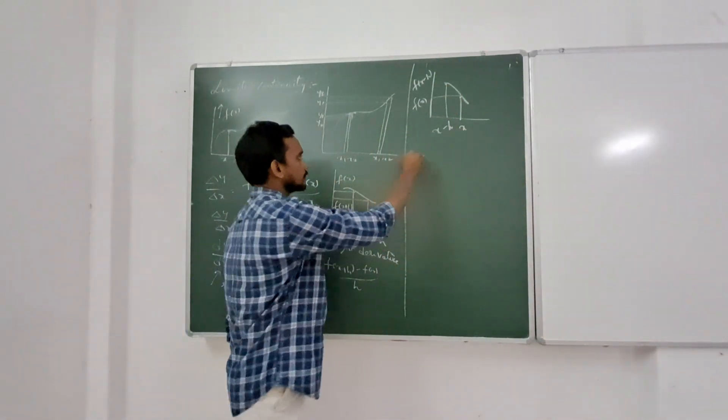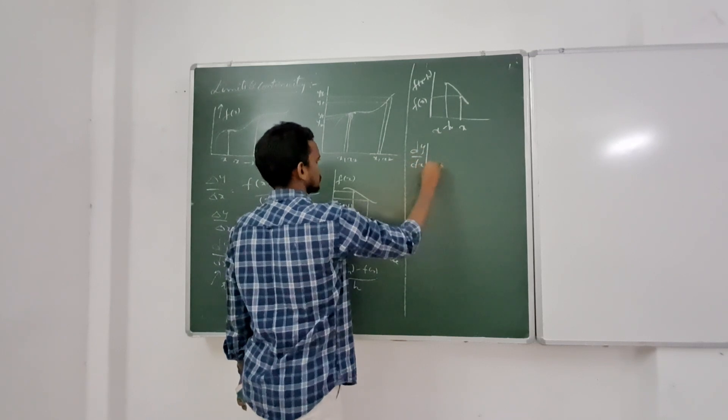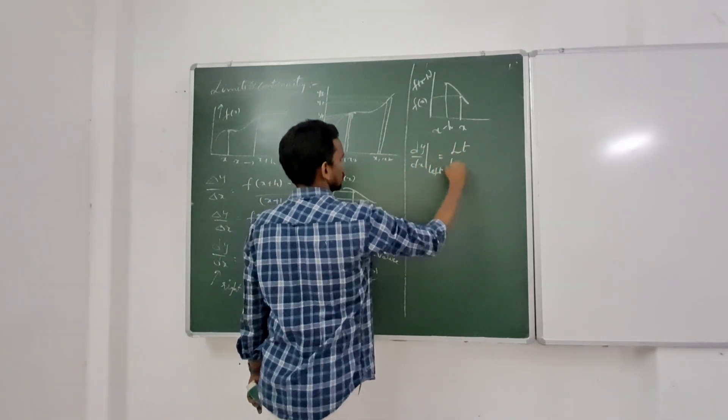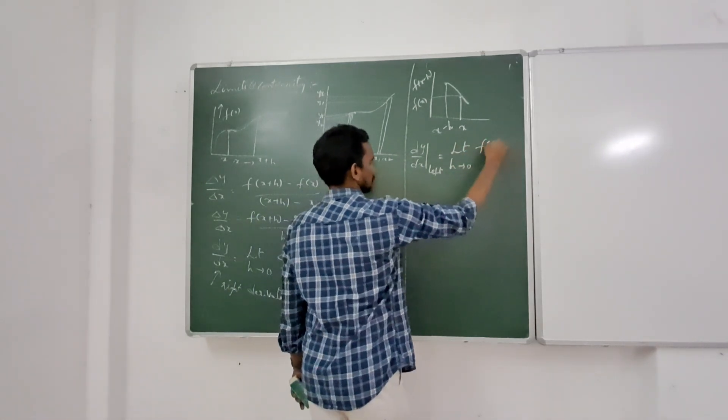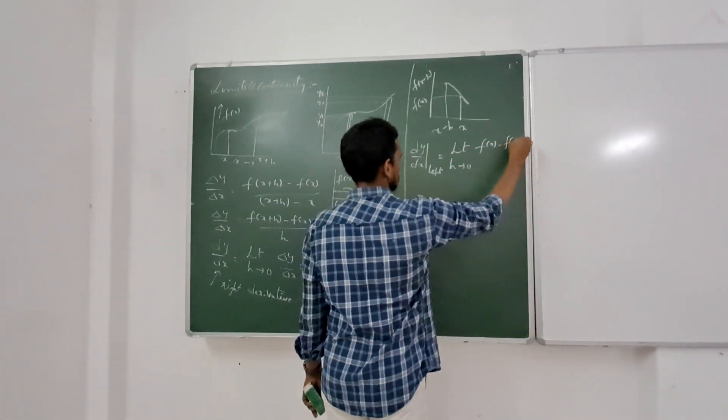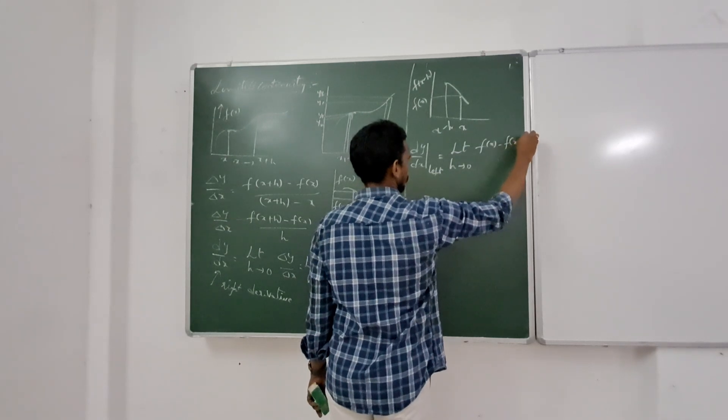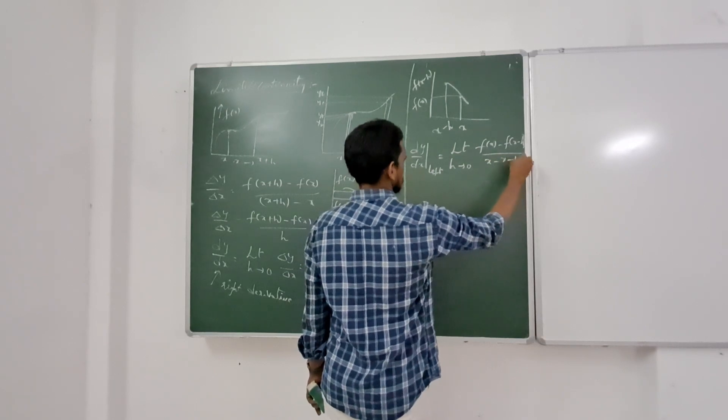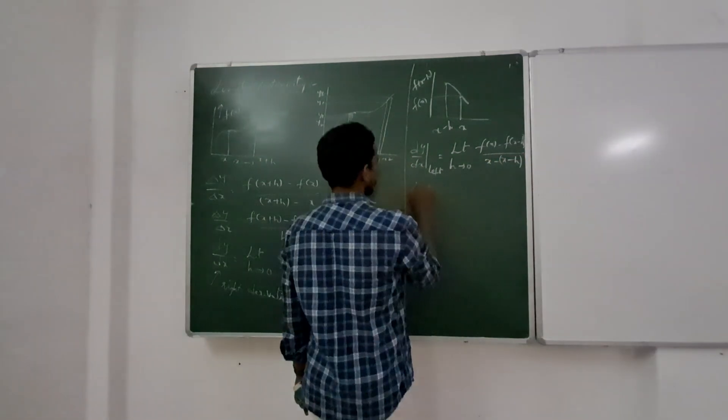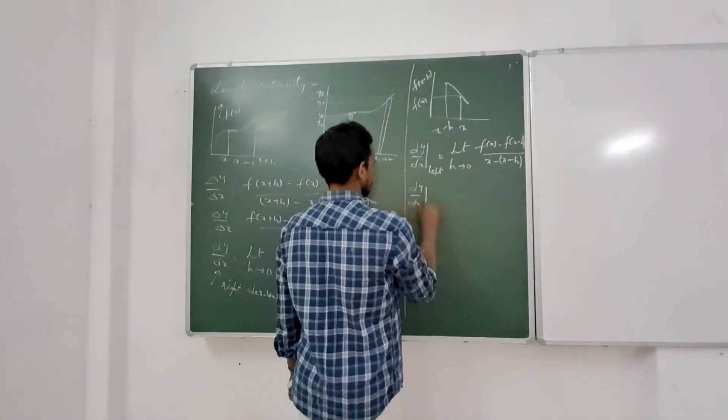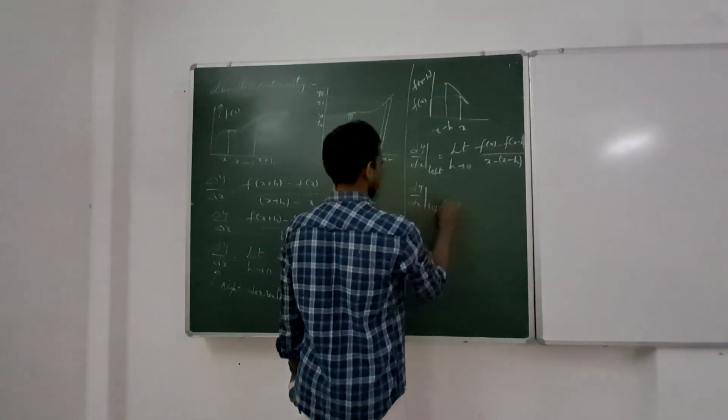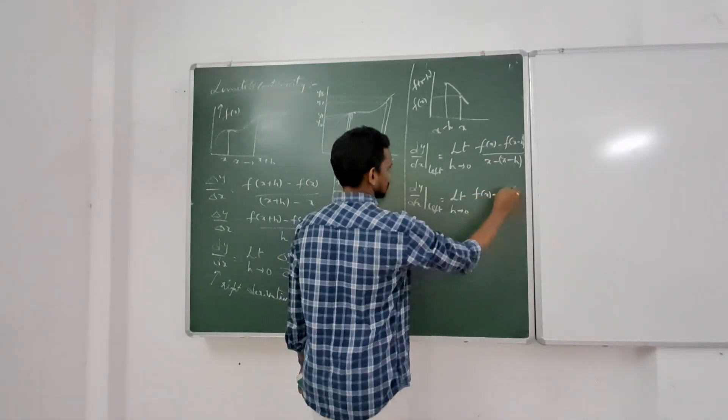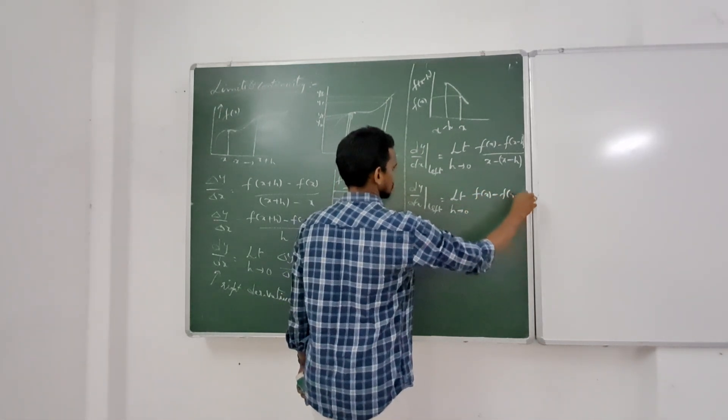So, left derivative dy/dx left is h tends to 0, f of x minus f of x minus h by x minus x minus h. So, dy/dx left equals limit h tends to 0, f of x minus f of x minus h by h.